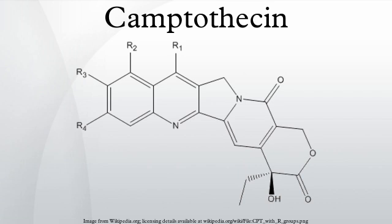One of the most potent compounds is the oxyaminomethyl derivative ST1481, which has the advantage of overcoming drug resistance caused by transport systems. Basic nitrogen in a carbon chain at position 7 makes the compound more hydrophilic and hence more water-soluble. For example, the derivative CKD602 is a potent topo-I inhibitor that successfully overcomes the poor water solubility and toxicity seen with CPT.